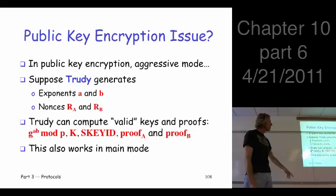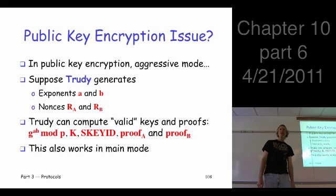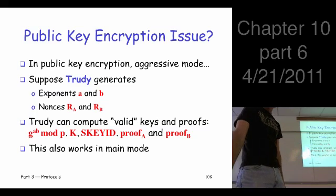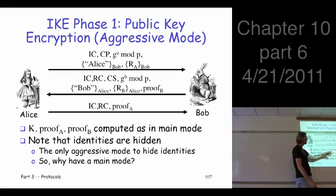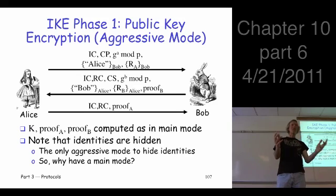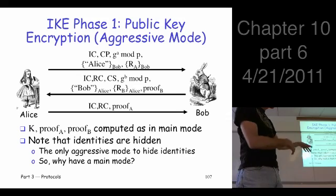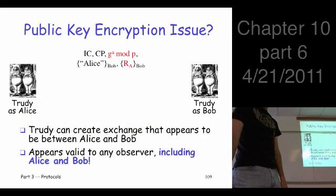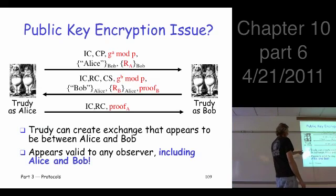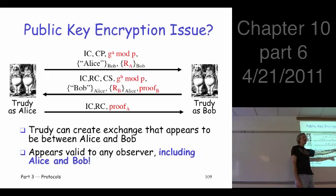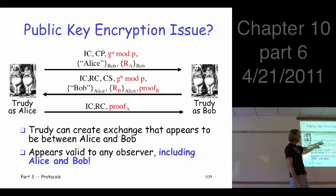She generates an exponent B and two nonces, called R_A and R_B. Given that, what Trudy can do — if you go back and look at the picture here — these are just public key operations. She can use Bob's public key and encrypt it, use Alice's public key and encrypt that, and so on. So the point is Trudy could pretend to be Alice and at the same time pretend to be Bob and create a conversation between Alice and Bob that looks legitimate.